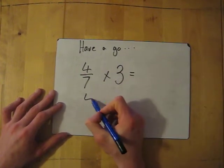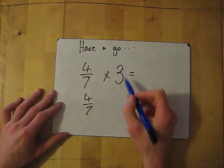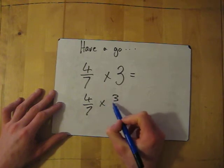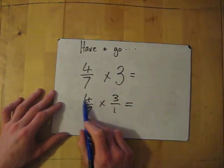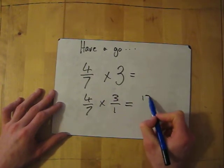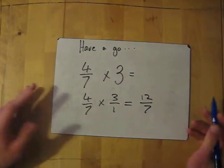So yeah, again, 4/7, we change this into our fraction: times 3 over 1. And then multiply the top two numbers: 4 times 3 is 12. Multiply the bottom two: 7 times 1 is 7.